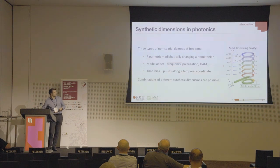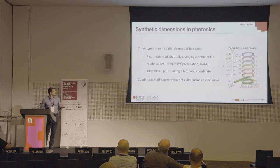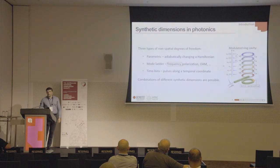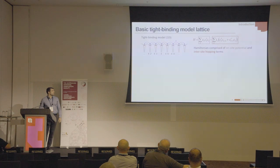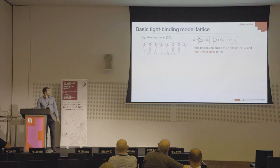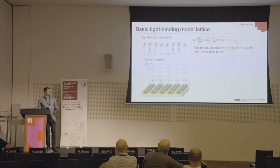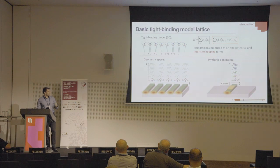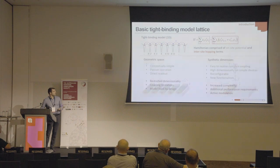We like ring resonators because they have a mode structure that is equidistant, and that makes it very easy to bridge those states by some external perturbation, such as electro-optical modulation. This set of modes is very similar to a tight-binding lattice model, where you have lattice sites among which a particle can hop along one direction or another. The ways to model this in photonics are either by having a group of cavities interacting evanescently, or by harnessing the different states in a resonator and connecting them by perturbation — that is the synthetic dimension approach.